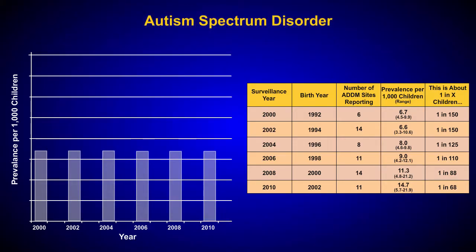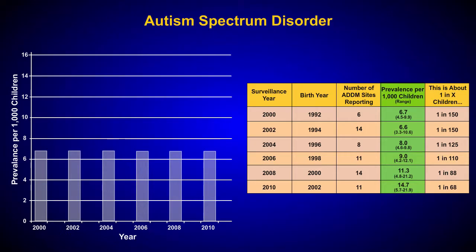Notice that in our table, the prevalence of ASD is reported as the number of occurrences per 1,000 children. This means our y-axis needs to extend up to 15 to cover the ranges reported. Notice also that the units — in this case, the number of cases per 1,000 children — need to be included.